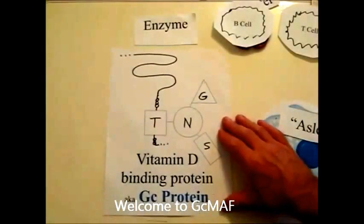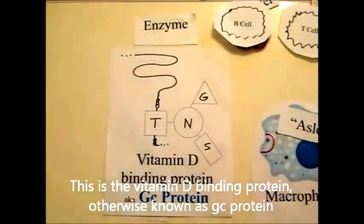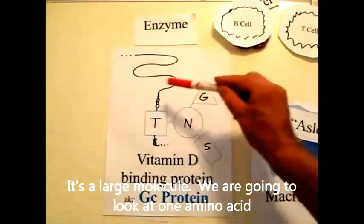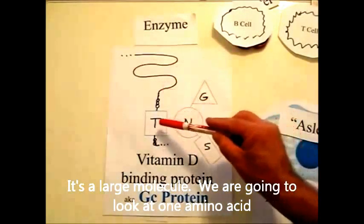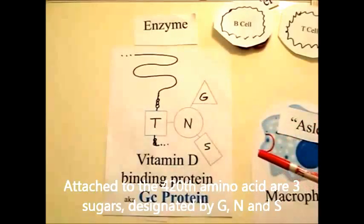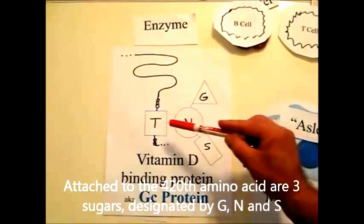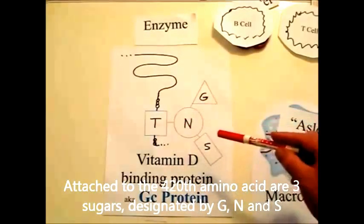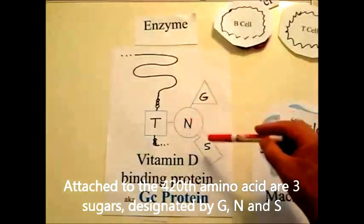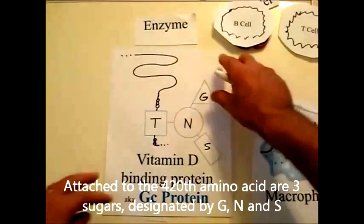Welcome to GC Math. This is a vitamin D binding protein, otherwise known as GC protein. It's a large molecule. We're going to be looking at one amino acid, attached to the 420th amino acid, with three sugars denoted by G, N, and S.